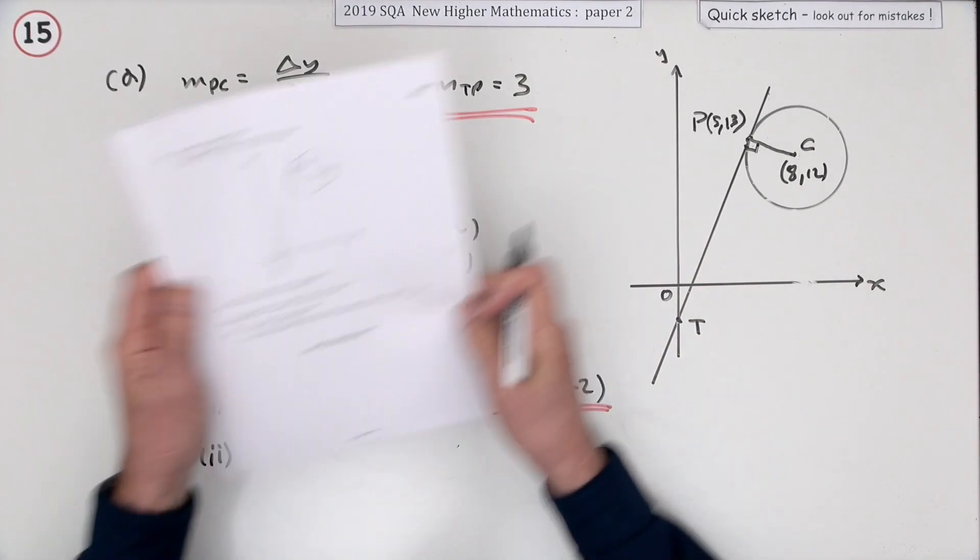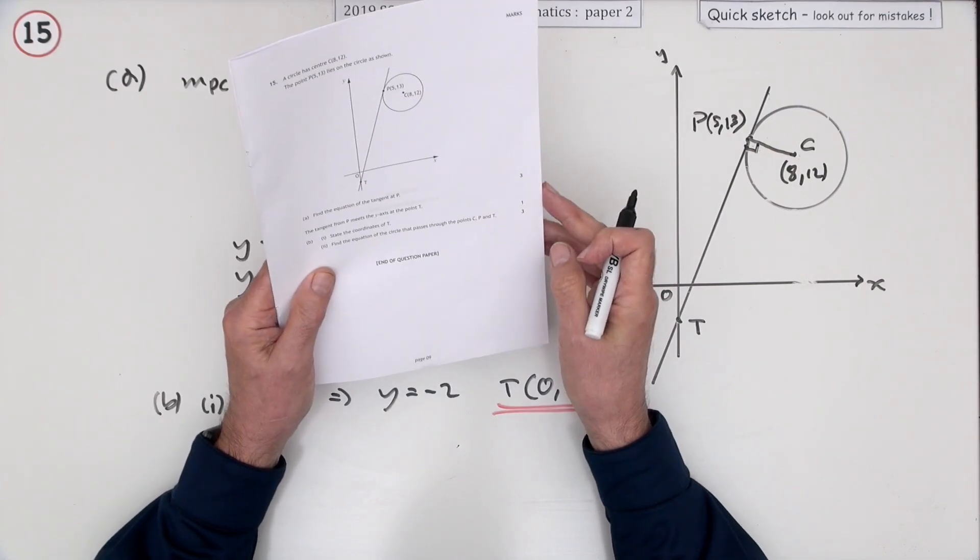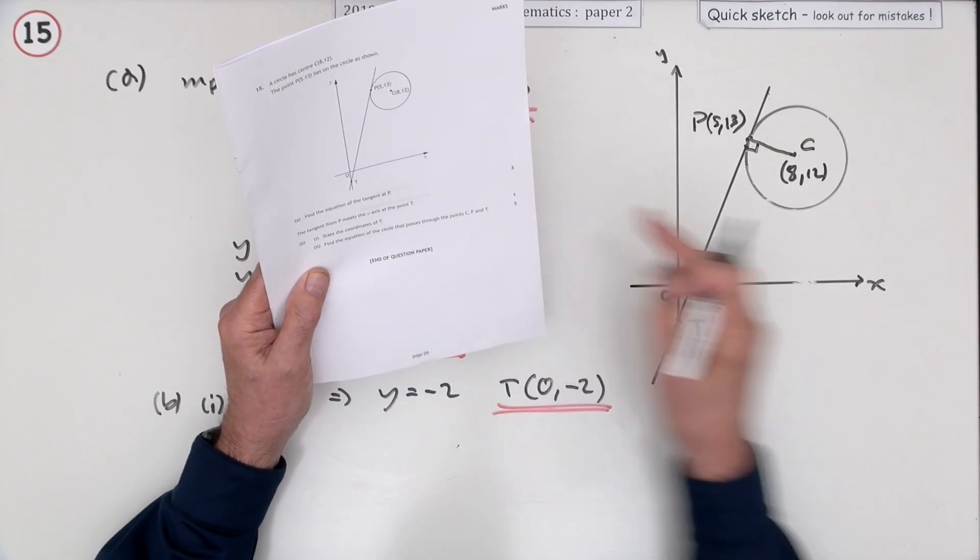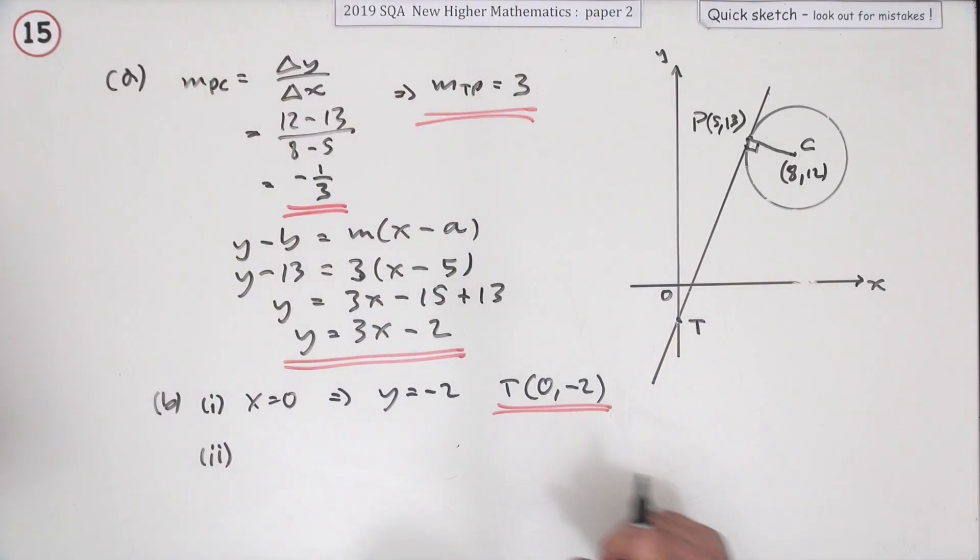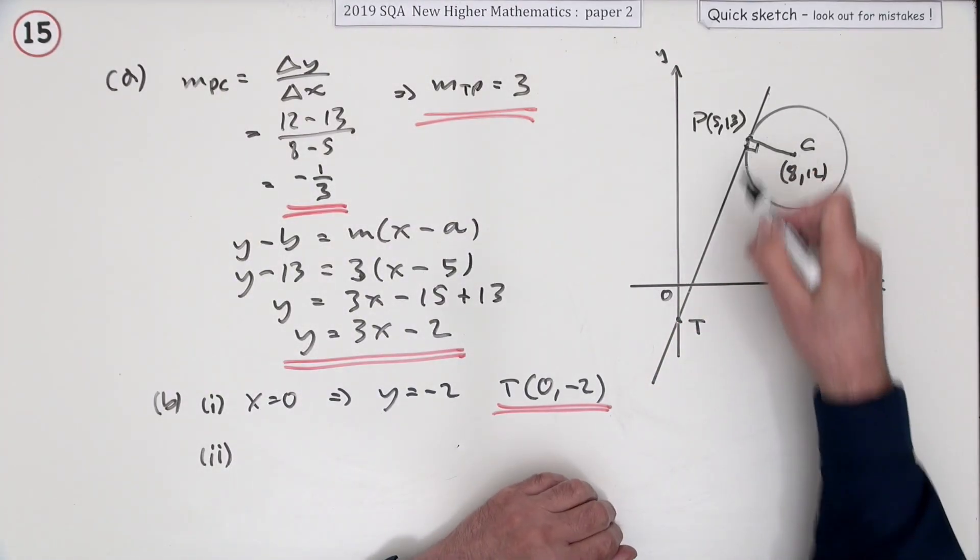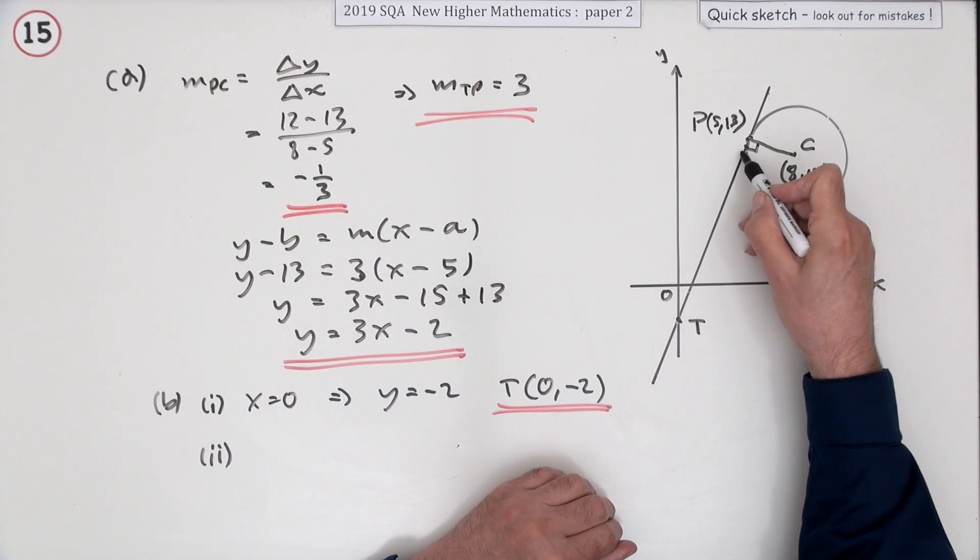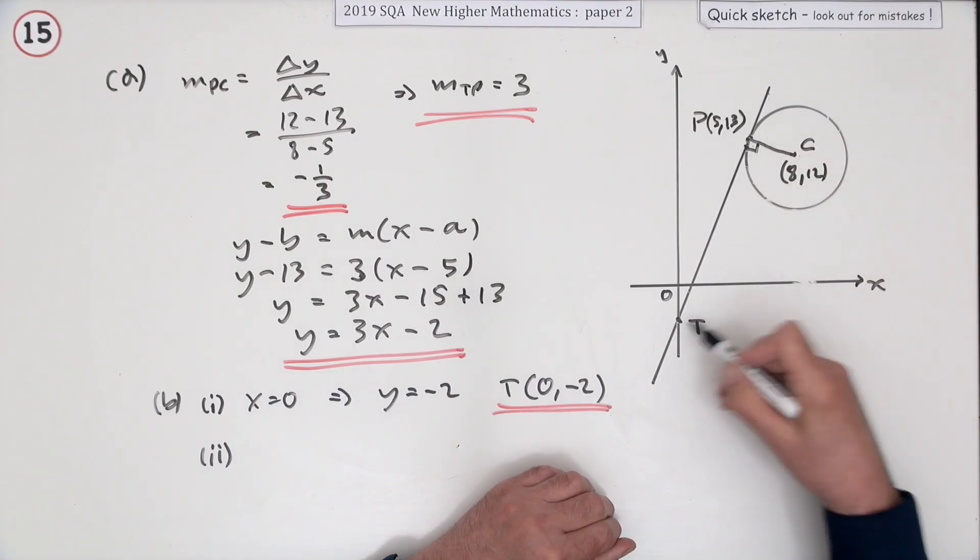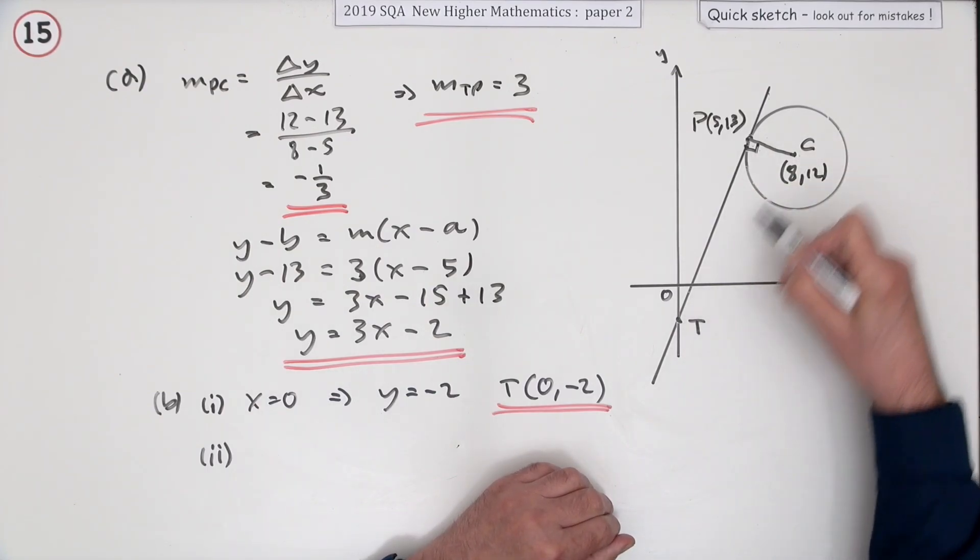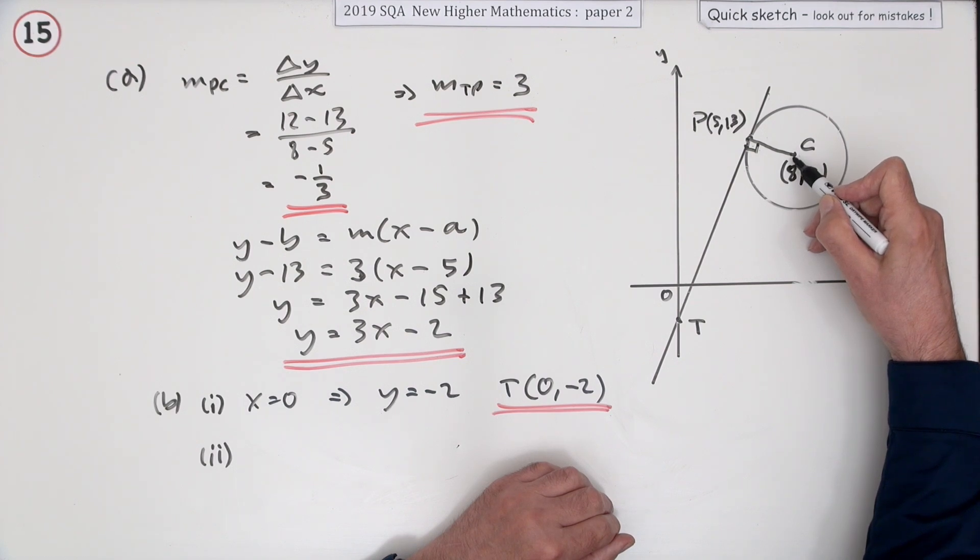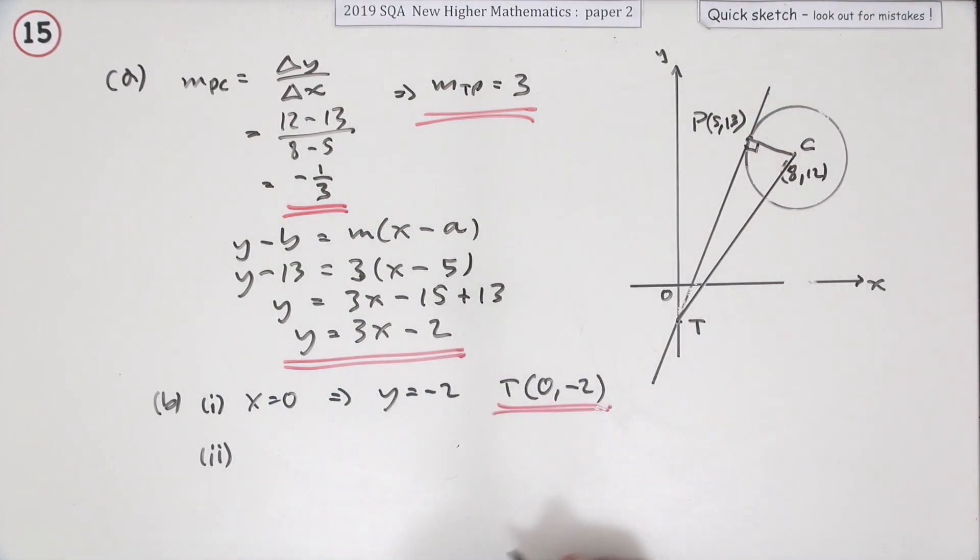Part 2. Final three marks. What's the equation of the circle that passes through the points c, p and t? Now, if those are points in the circle and that happens to be a right angle, you only get a right angle in a special case in a circle and that's when you've got a diameter. So c, t must be the diameter.